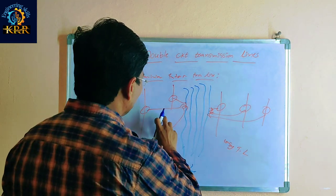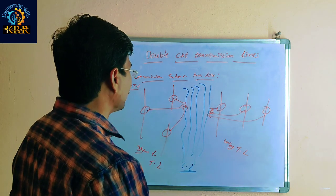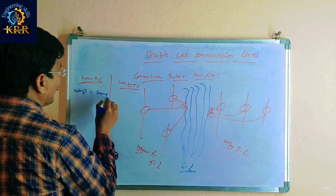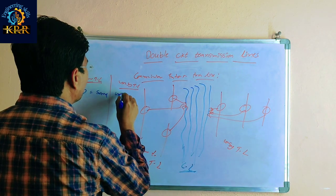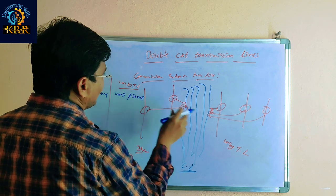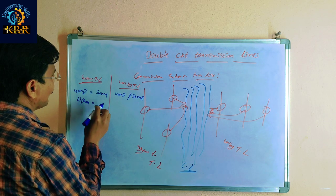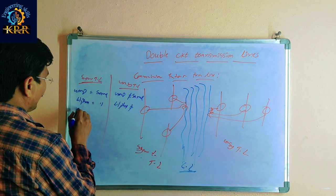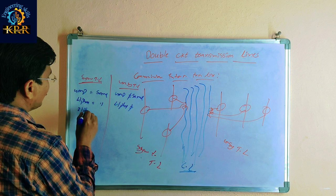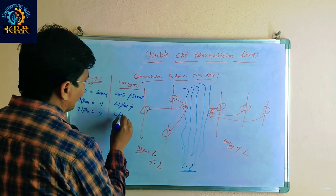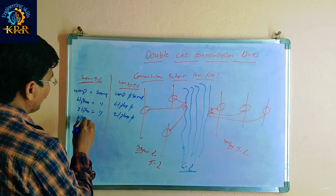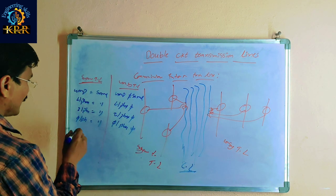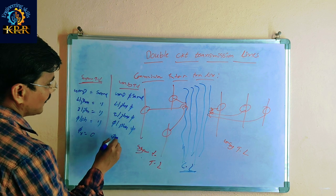In the symmetrical transmission line, the GMD is same. But in the unsymmetrical transmission line, the GMD is not same. Inductance for each phase is same in symmetrical, but here inductance for phase is not same. Current for phase is same in symmetrical, but here current for phase is not same. Flux for phase is same in symmetrical, but here flux for phase is not same. Resultant flux is zero here in symmetrical, but resultant flux is not zero in unsymmetrical.